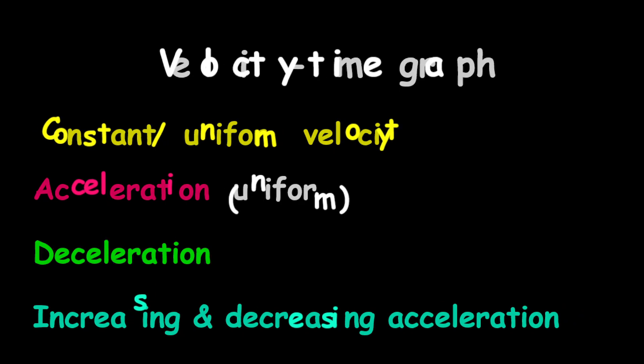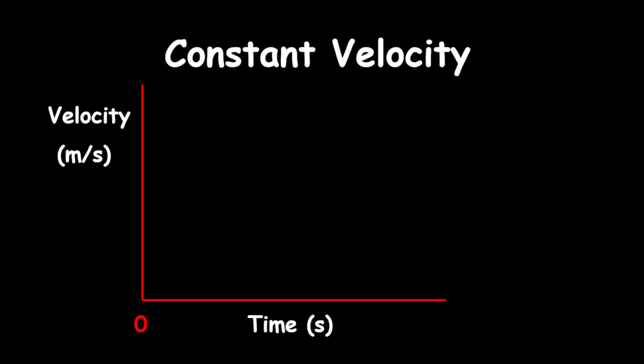Let's start off with our constant velocity-time graph. I just want to point out that the y-axis represents velocity while the x-axis represents time. Constant velocity — and I want to also point out that constant velocity is the same thing as uniform velocity — simply means that the velocity is not changing regardless of the time. So therefore, we have a straight horizontal line.